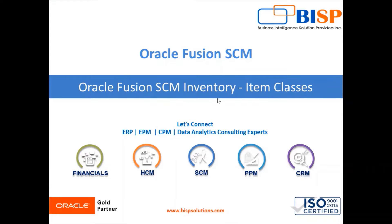In Oracle Fusion Supply Chain Management Inventory application, first we have to create the item class. With the help of item class we can create the item. For creating the item we require item classes, and after creating the item we have to assign our item to a child inventory organization.